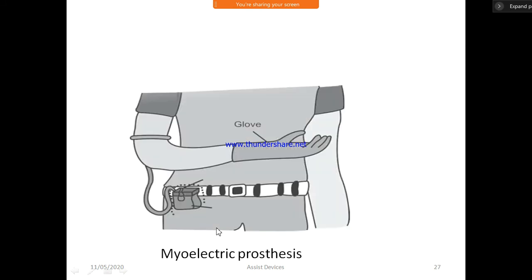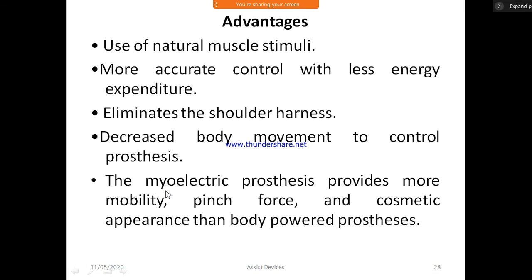Control of the motor regulates the extent or speed of the prosthesis, such as elbow flexion or extension, or opening and closing of the fingers of the terminal device. The signals are picked up by the electrodes on the surface of the skin, which activates a battery-driven motor that operates a prosthetic component like the finger.